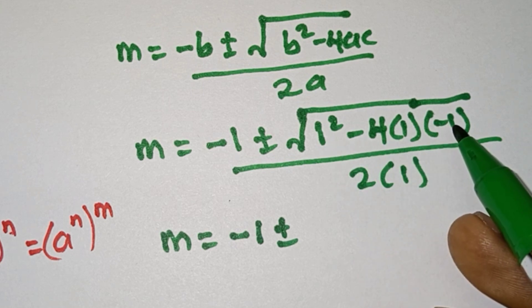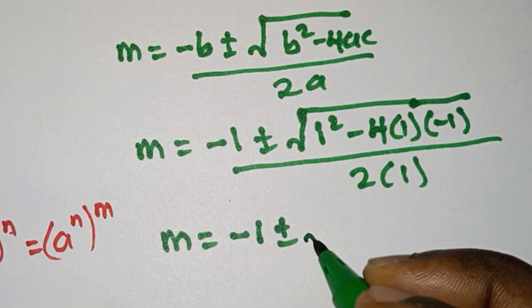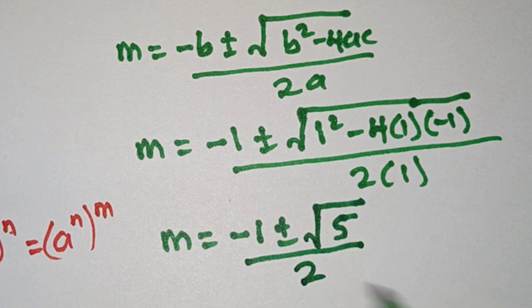We have 1 squared which is 1, then -4 times 1 times -1 that is +4, making 5. So we have m = (-1 ± √5)/2.